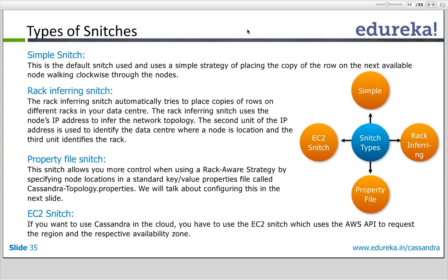Simple snitch uses a simple strategy of placing the copy of the row on the next available node working clockwise through the nodes. Rack inferring snitch automatically tries to place copies of rows on different racks in your data center.